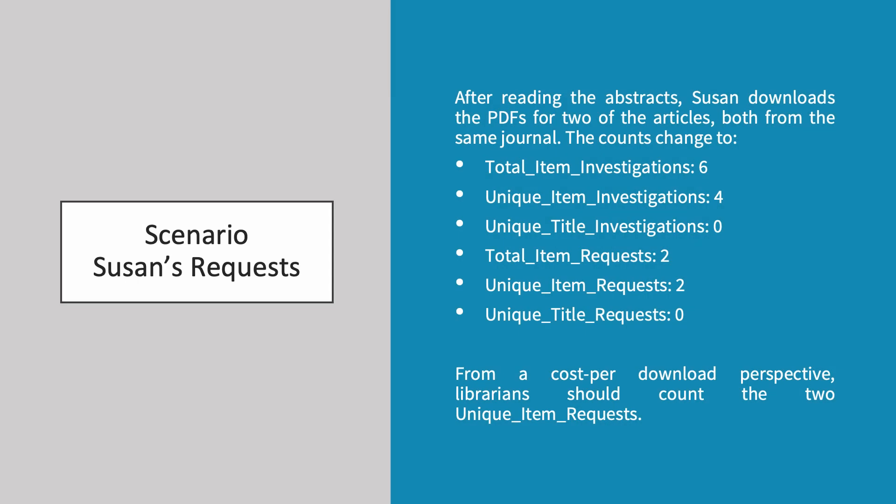After reading the abstracts, Susan downloads PDFs for two of the articles, both from the same journal. The counts change to 6 total item investigations, 4 unique item investigations, 0 unique title investigations, 2 total item requests, 2 unique item requests and 0 unique title requests. From a cost per download perspective, librarians should count the 2 unique item requests.